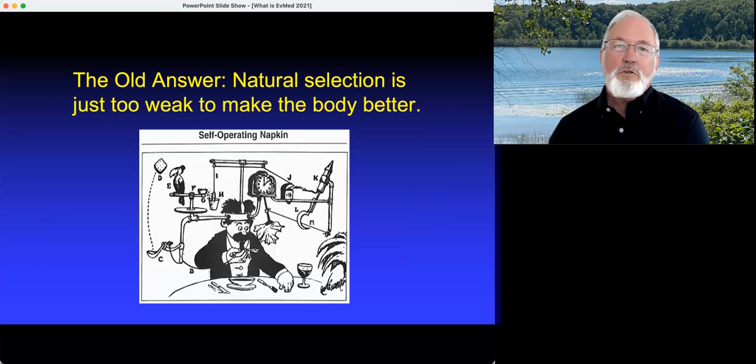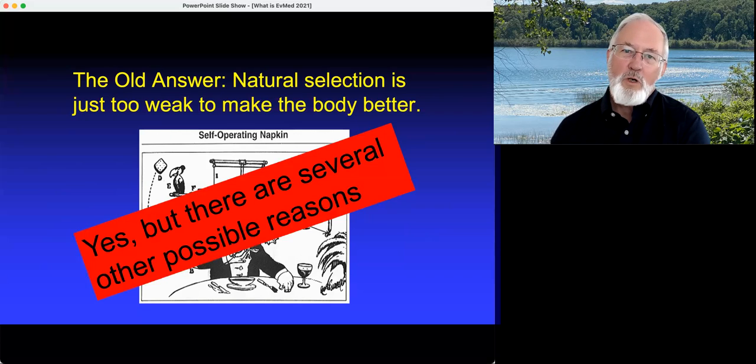The answer I was taught in medical school and many people still emphasize is that natural selection is just too weak to make things better. After all, mutations happen. Genes can drift to fixation. Development isn't completely canalized. So hey, the body can't be perfect. That's absolutely true, and perhaps the single most important reason for vulnerability, but it's only one explanation. There are several others we need to consider.